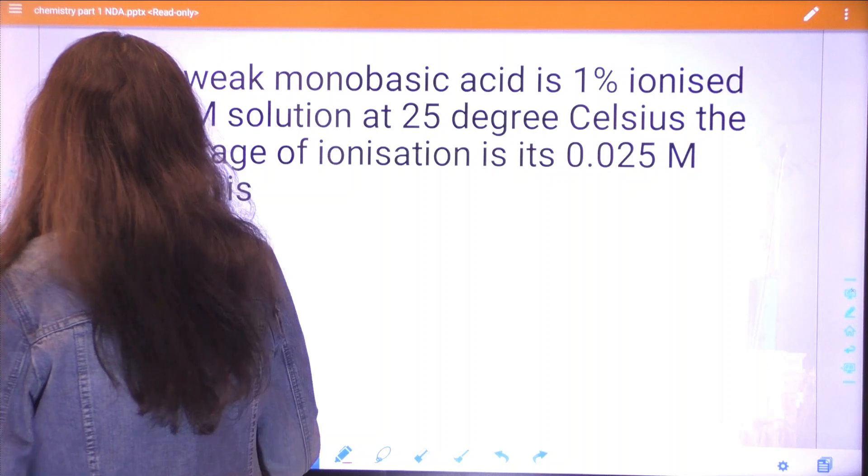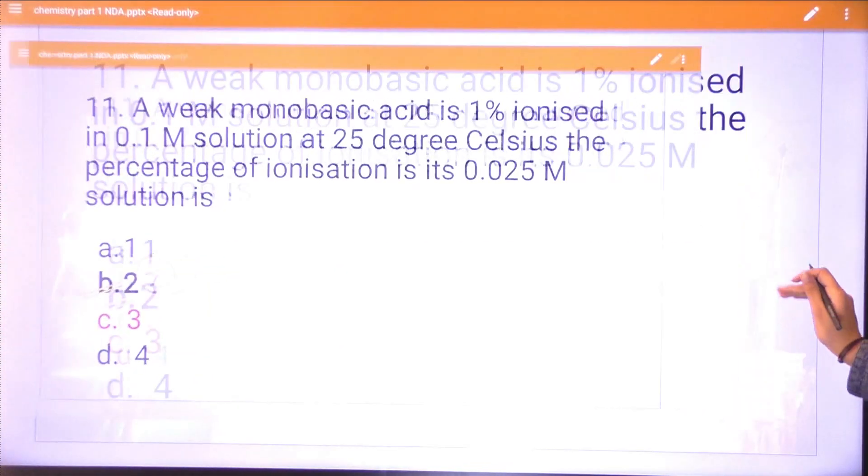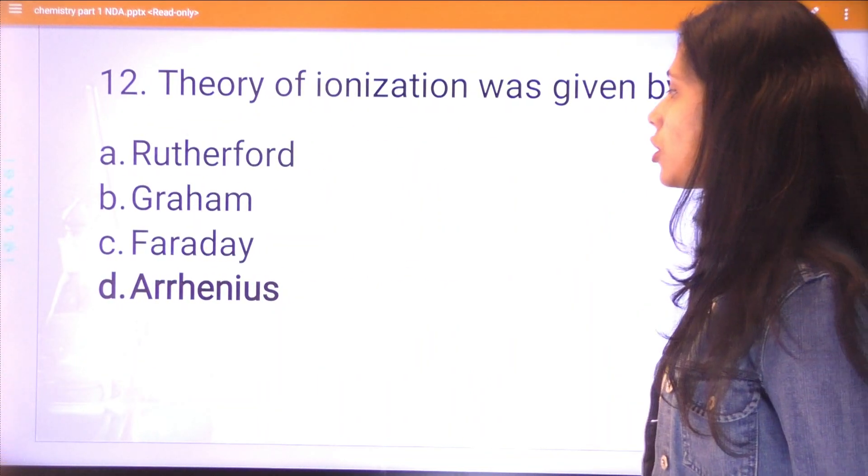Question twelve: the theory of ionization was given by Arrhenius.